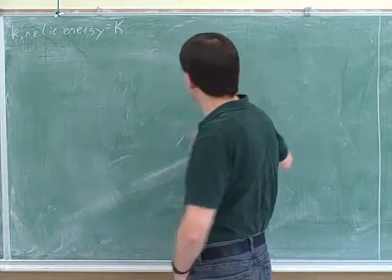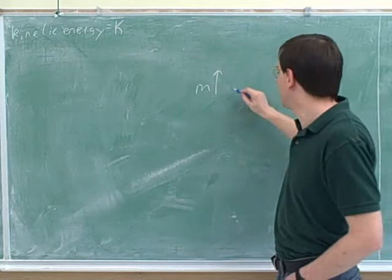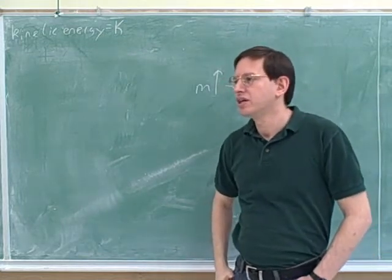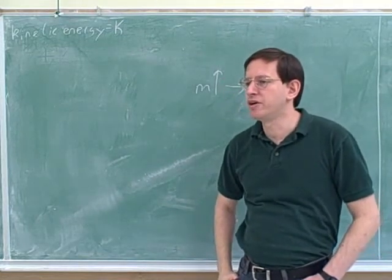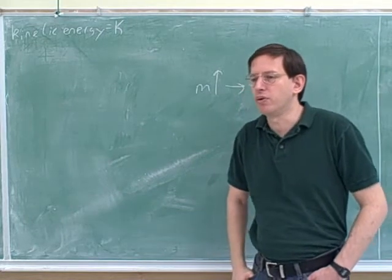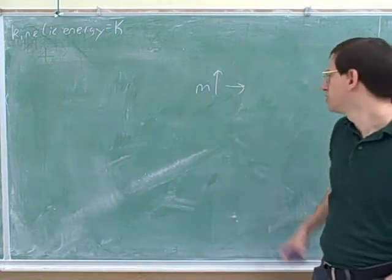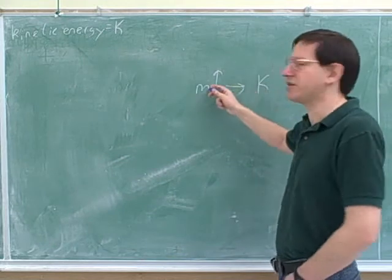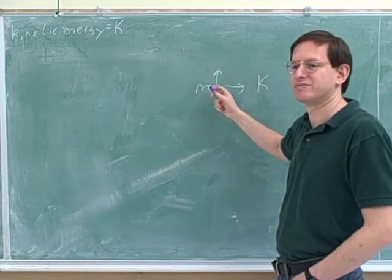Let's say you increase the mass of the object. So you have a moving object. What type of moving object would be harder to bring to a halt? A massive one or a light one? Massive. So should this increase or decrease the kinetic energy to have a bigger mass? Increase.